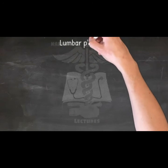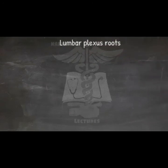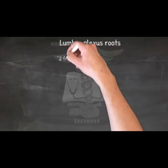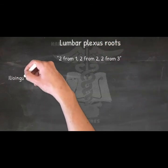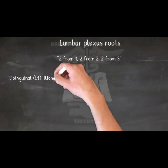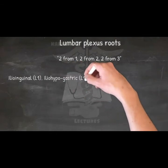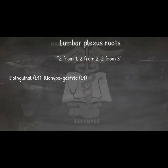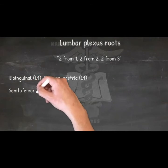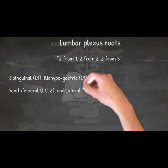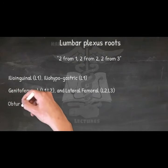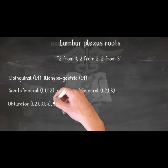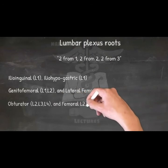Lumbar plexus roots — mnemonic: '2 from 1, 2 from 2, 2 from 3.' 2 nerves from 1 root: Iliohypogastric L1. 2 nerves from 2 roots: Genitofemoral L1–L2. 2 nerves from 3 roots: Lateral femoral cutaneous L2–L3, and from 3 roots: Obturator L2–L3–L4 and Femoral L2–L3–L4.